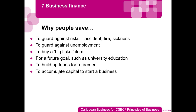Why do people save? To guard against risk — accident, fire, sickness — so you save just in case something happens. To guard against unemployment, you put aside money monthly so if you get laid off you have something to hold you over until you find a new job. You also save to buy big ticket items like a washing machine, refrigerator, appliances, a big TV, a flat screen, a computer, or a game system — you save up towards those things.